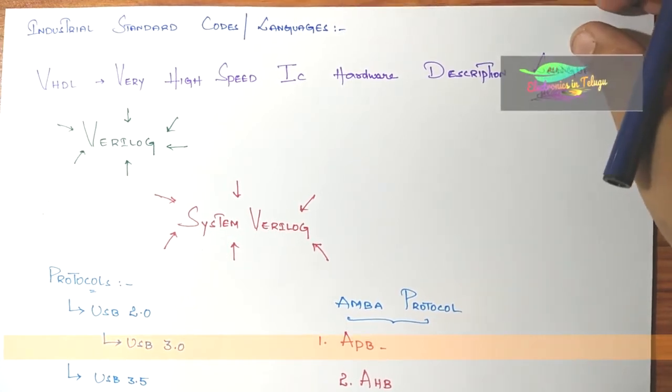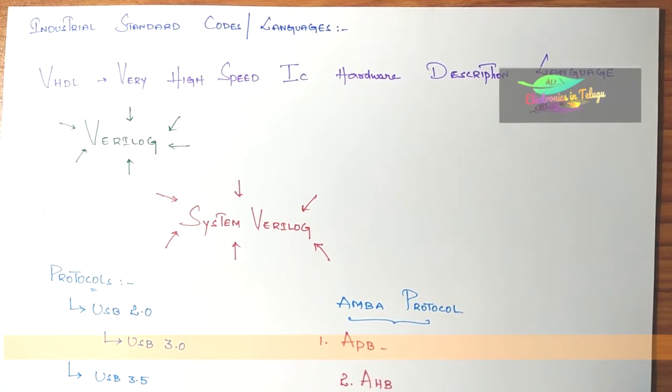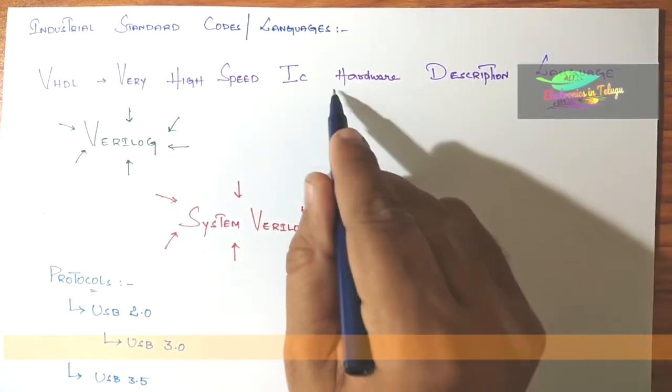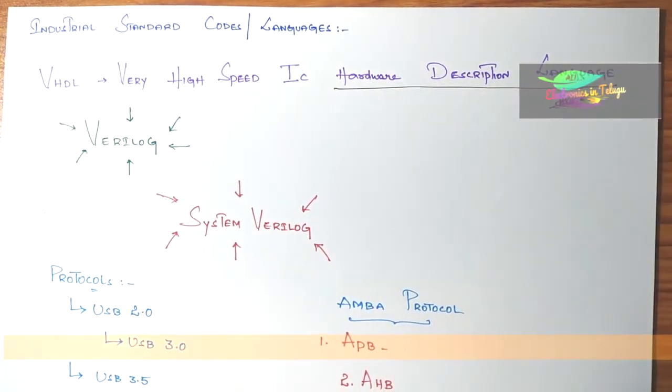ECE is a combination of electronics and communication engineering. Every video I make will be related to electronics, not purely communication. From industry point of view, first thing they expect is language proficiency skills. For example, software companies expect C, C++, Java, Oracle - all discrete languages and other upgraded languages. Similarly, from electronics point of view, we have hardware description languages.